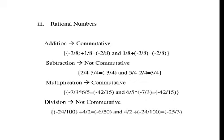Division is not commutative for rational numbers. For example, minus 24 by 100 divided by 4 by 2 equals minus 6 by 50. Interchanging the two terms, 4 by 2 divided by minus 24 by 100 equals minus 25 by 3. So division is not commutative for rational numbers.